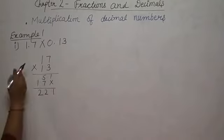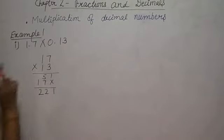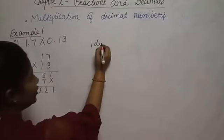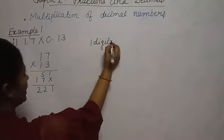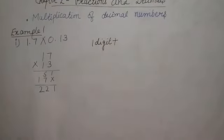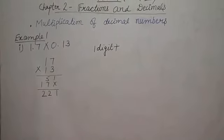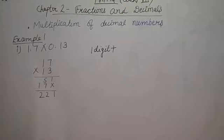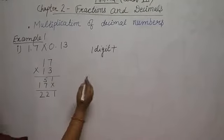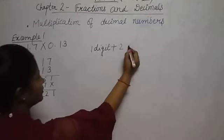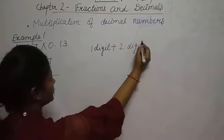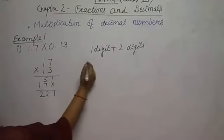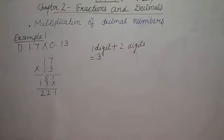Now look at the decimals. In 1.7 there is one digit after the decimal. In 0.13 there are two digits after the decimal. One digit plus two digits — how many digits total? Three digits.